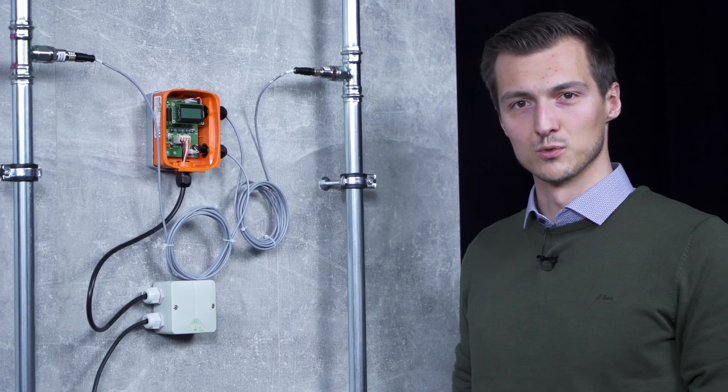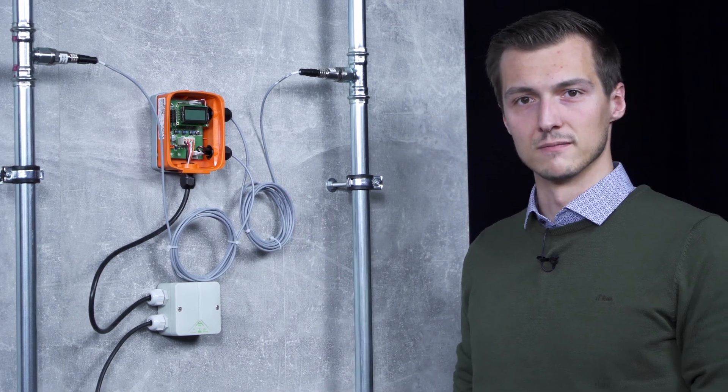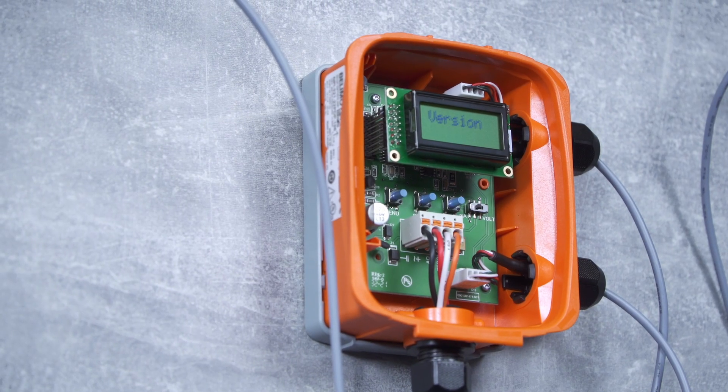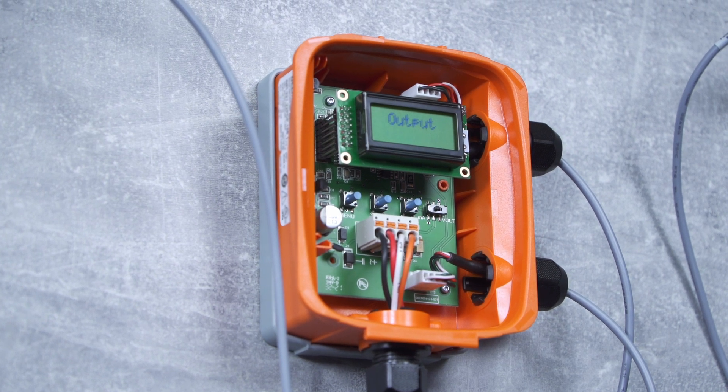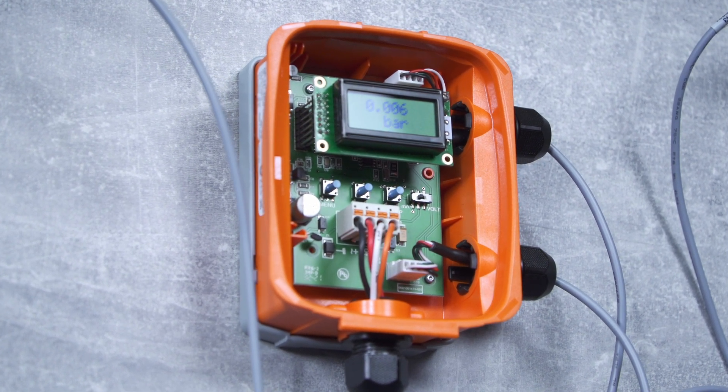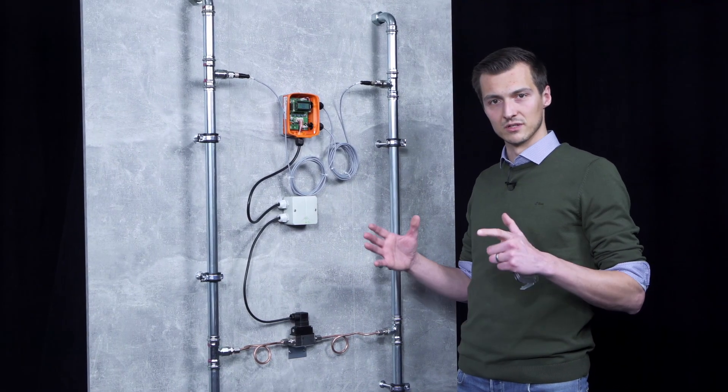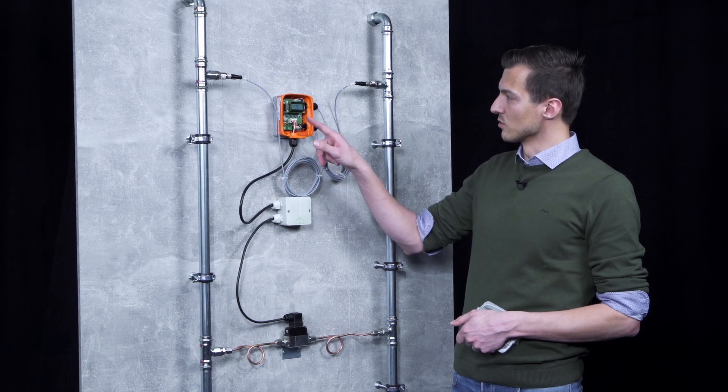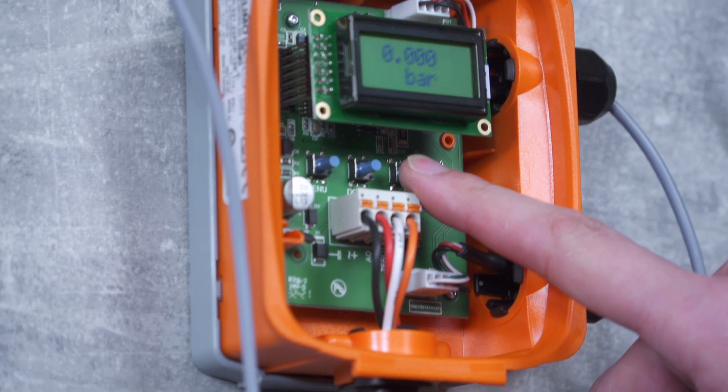This completes the installation of our 22 PDP and we can switch on the power supply. When the power supply is switched on, the sensor goes through a start-up sequence and then displays the current differential pressure. You can now use the menu to make various settings, such as limiting the measuring range, and you can also perform a zero-point adjustment by pressing the zero-up button for three seconds.